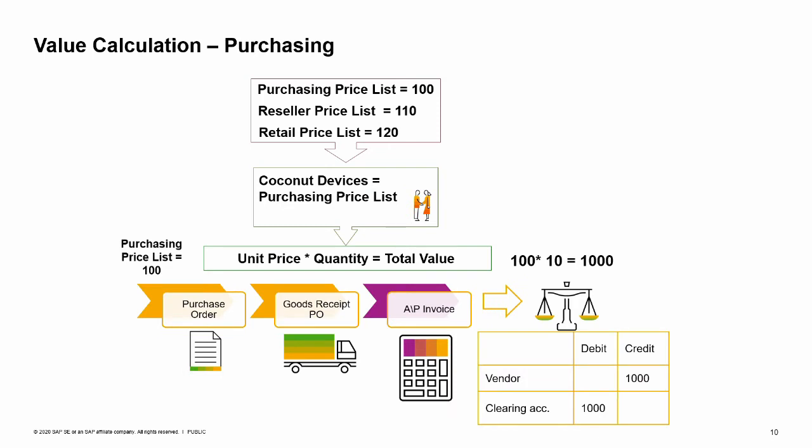In the purchasing process, a common scenario of how prices are set would be: Joe the warehouse manager issues a purchase order of 10 portable media players. He chooses the vendor Coconut Devices, and then the item Portable Media Player. The price per unit appears in the purchase order. Since Coconut Devices is a vendor, its default price list as defined in its master data record is the purchasing price list. Therefore, in the purchase order, the unit price for Portable Media Player is 100, the price from the purchasing price list. Joe enters a quantity of 10. The total value of the purchase order is 1,000, assuming there are no additional items, and that no discount, freight charges, or tax amounts are added.